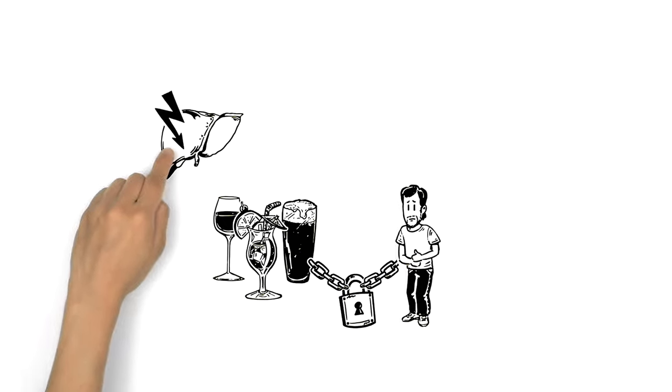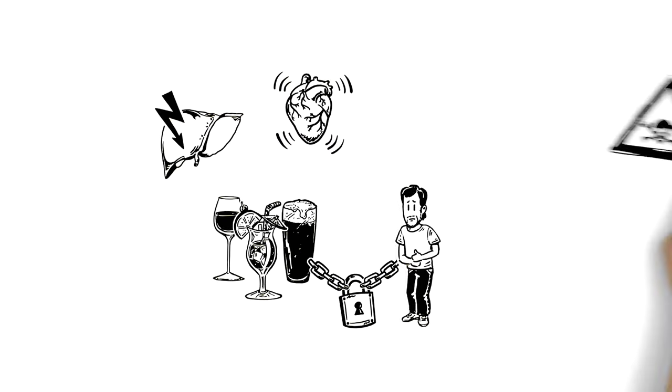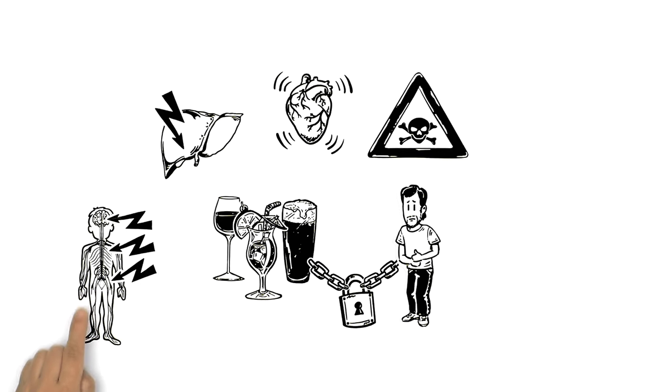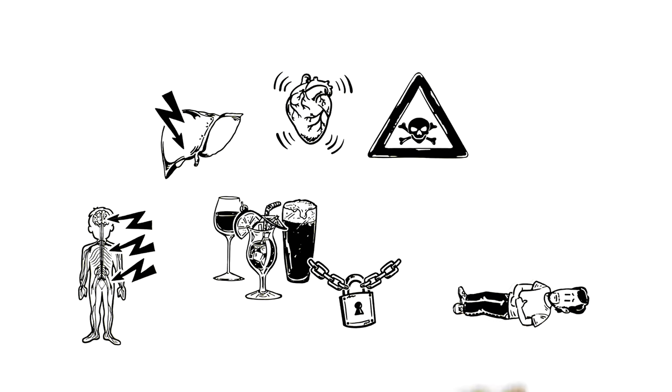Long term problems can include addiction, liver disease, high blood pressure and cancer. Alcohol's effect upon the central nervous system can lead to coma and even death.